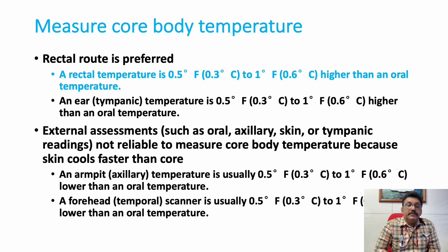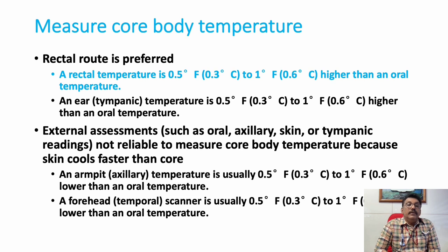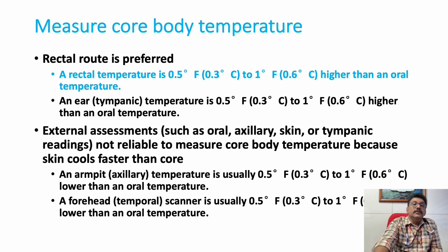Rectal temperature is 0.3°C (0.5°F) to 1°F higher than oral temperature and is the most accurate method for measuring body temperature. In a busy emergency room, axillary or oral temperature is typically used as a practical alternative, although these are less accurate.